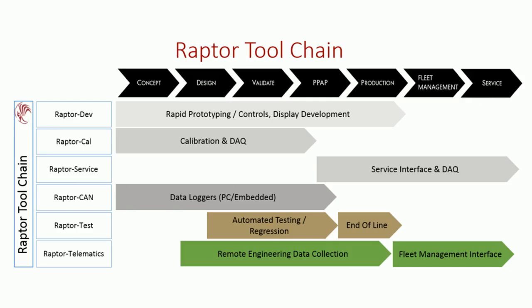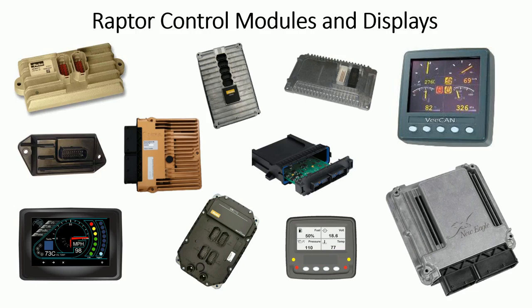The Raptor toolchain consists of six unique software products: Raptor Dev, Raptor Cal, Raptor Service, Raptor Can, Raptor Test, and Raptor Telematics. Each of these tools' features, functionality, and workflows were designed by experienced application engineers hoping to improve upon the shortcomings of other software tools currently on the market. The Raptor toolchain was designed to work with an extensive line of automotive-grade, production-ready control modules and displays.